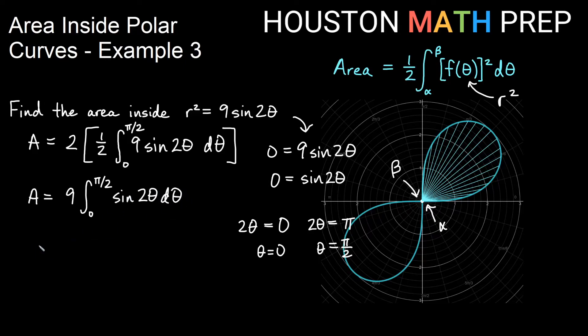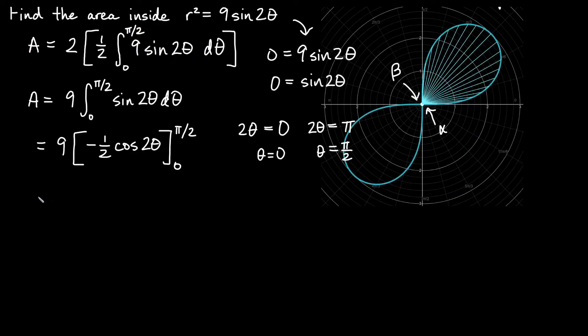This is actually a really easy integral to do. We'll get 9 times the antiderivative of sin(2θ). The antiderivative of sine is negative cosine, but we get the reciprocal of 2 coming out, so we get -½cos(2θ). We'll evaluate that from 0 to π/2.